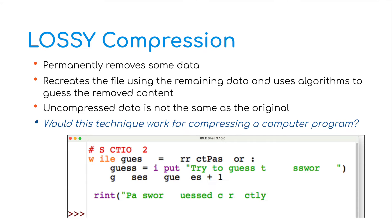Lossy compression permanently removes some data — we don't get it back. If we compress a file and then decompress it, data has been removed. It recreates a file using the remaining data and uses algorithms to guess the removed content, meaning the uncompressed data is not the same as the original. For example, a Python file compressed with lossy compression might lose code data, meaning the program simply wouldn't run. The same applies to a spreadsheet, database, or similar file.